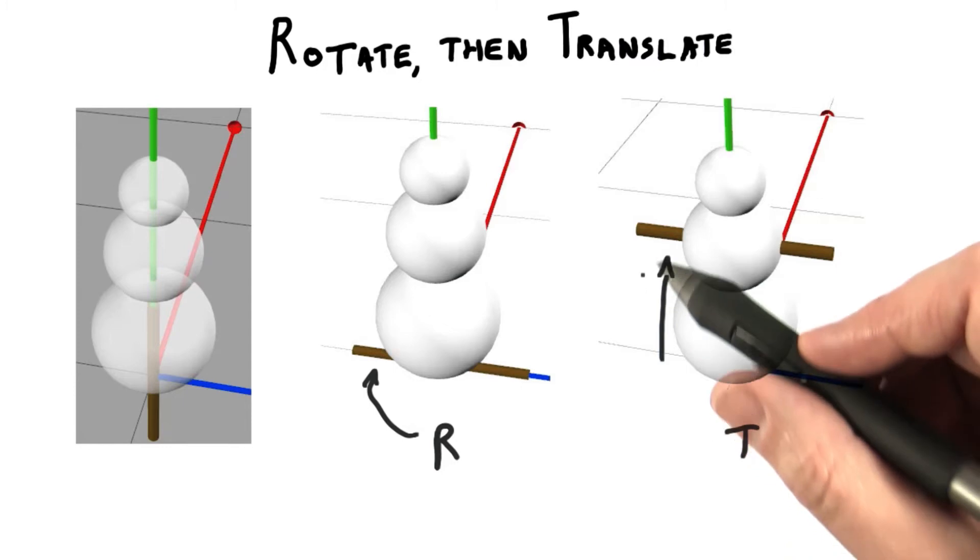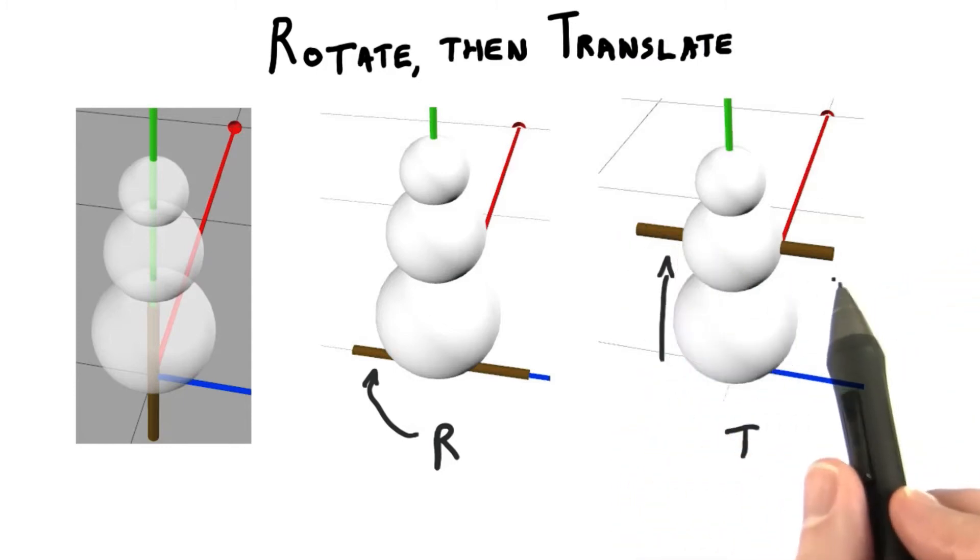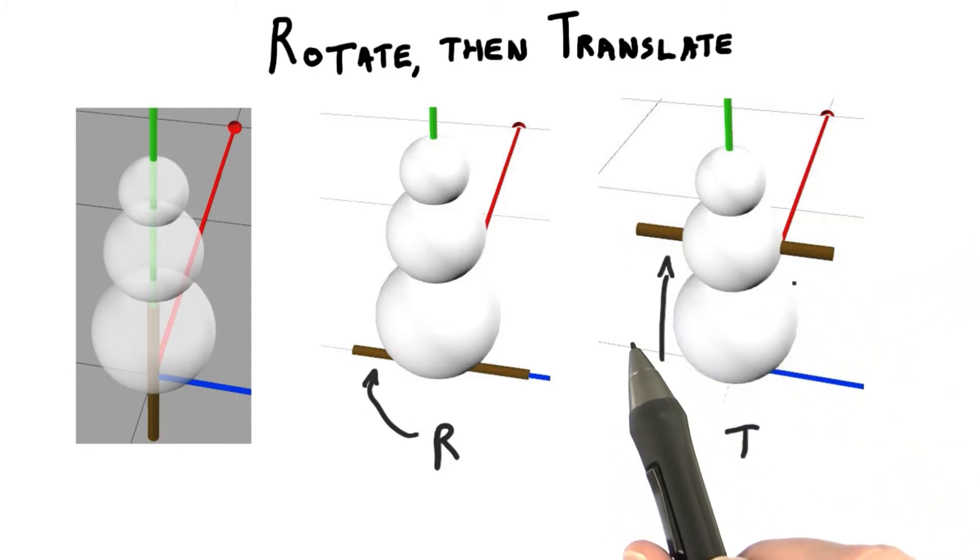Then the translation moved it upwards in world coordinates to the proper location. Let's see what would happen if we first translated, then rotated.